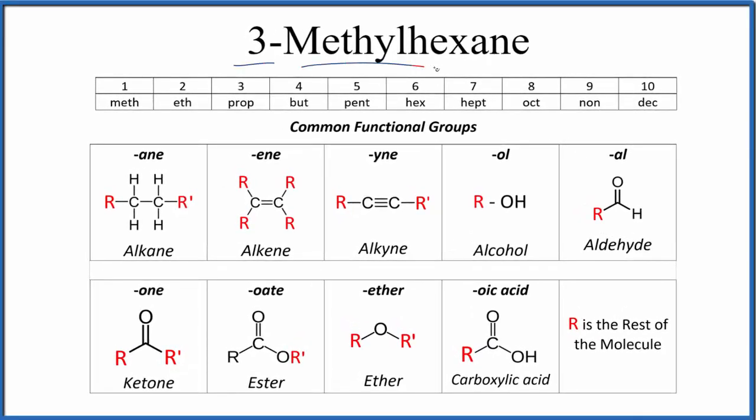Let's write the structure for 3-methylhexane. So first off, we see that it ends in A-N-E. That means we're going to have this alkane here. It's going to be carbon atoms connected with single bonds surrounded by hydrogen. So we know that we'll have single bonded carbon atoms.